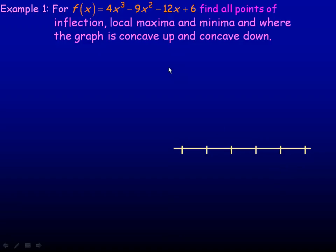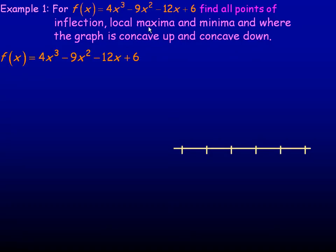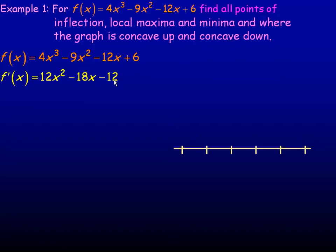In the example on page 3, for this function we are asked to find all points of inflection, local minimum and maximum points, and where the graph is concave up or concave down. So the first thing we need to do is take our function and differentiate. The derivative of 4x cubed is 12x squared, the derivative of negative 9x squared is minus 18x, and the derivative of negative 12x is negative 12.